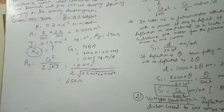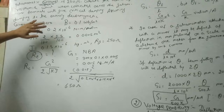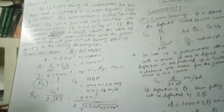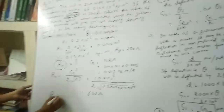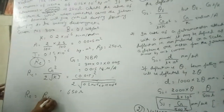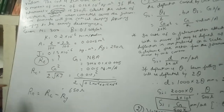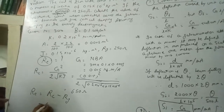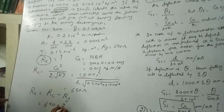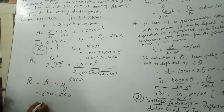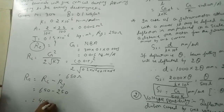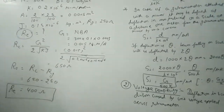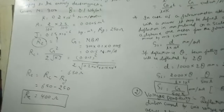Now we calculate the external resistance for critical damping. As derived in the previous lecture, RE = RC − RG. RG is the given value of 250 Ω and RC has been calculated as 650 Ω. So RE = 650 − 250 = 400 Ω. This is the external resistance to be added in the circuit for critical damping.